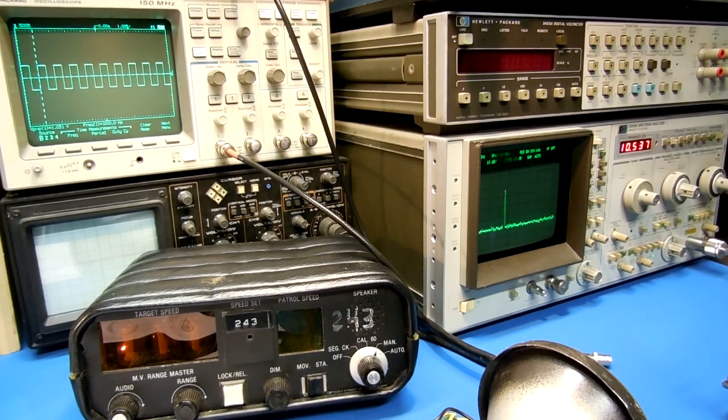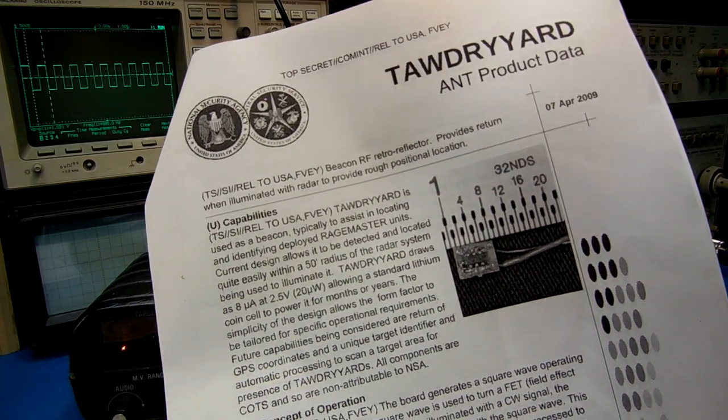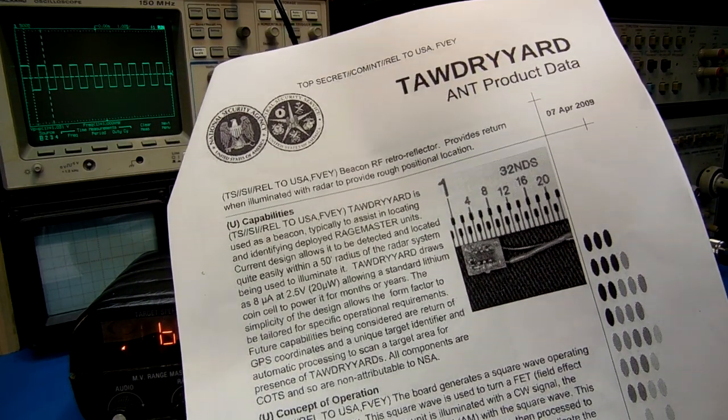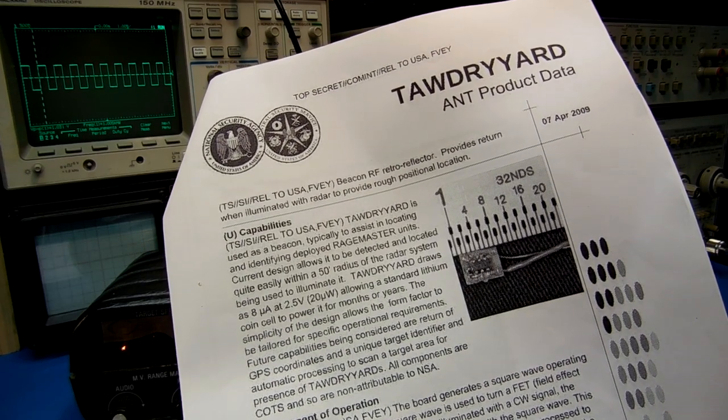This is going to be an overview of the NSA's Tawdry Yard Radar Retroreflector. This is also going to be a principle of the amplitude modulated backscatter principle which these retroreflector devices operate on.